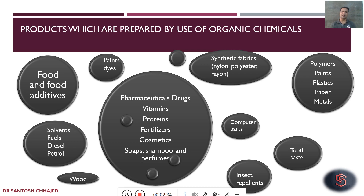Even insect repellent. And from the morning, the first thing what we do is brushing our teeth — that requires toothpaste and brush, which is nothing but made up of chemicals. So anything around you, what you observe, what you see is nothing but chemicals. It could be a metal, it could be a plastic, it could be a polymer and so on. Even our body, every living thing what we are observing, it again consists of one or other chemicals.